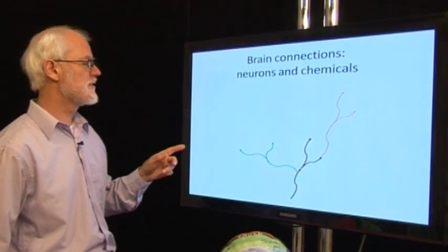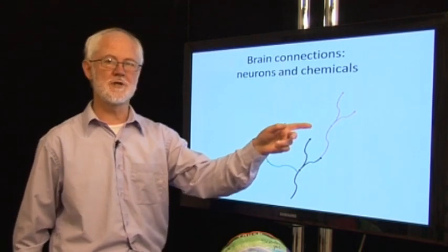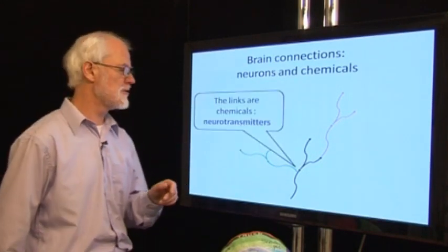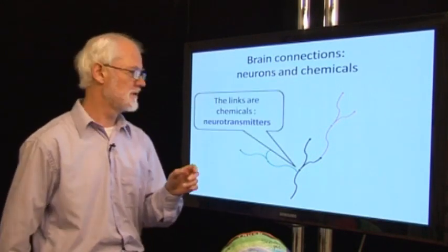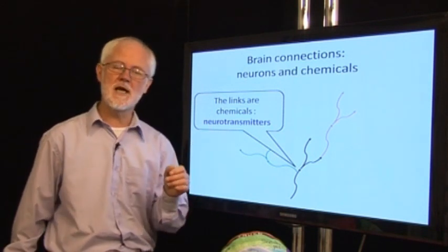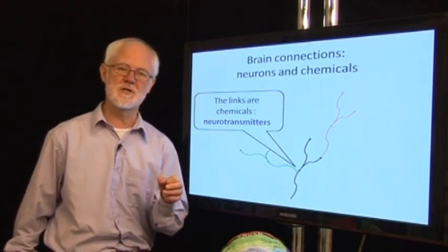This diagram shows three neurons joined together. The connections between the neurons are not electrical, they are chemical, and they use chemicals which are called neurotransmitters.